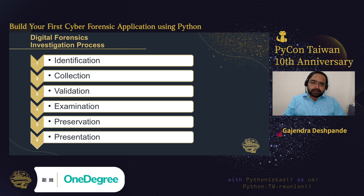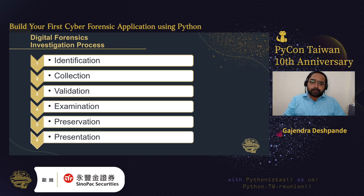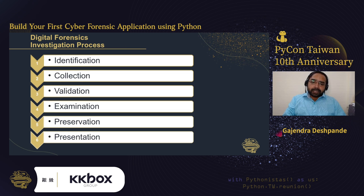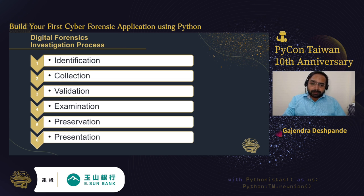The next step is preservation. Whatever objects or data are collected need to be stored in a proper place with lockers, ensuring appropriate security and room temperature — otherwise data may be lost from hard disks. Finally, presentation is very important. A standard procedure is laid out by law enforcement agencies and must be strictly followed during all five preceding steps. If something is lacking, it may not be accepted as evidence in court.